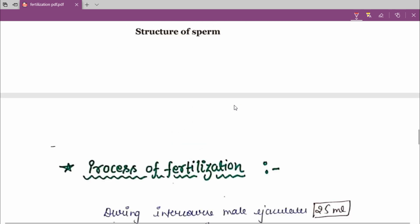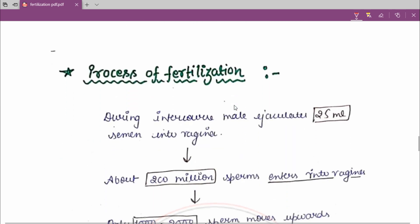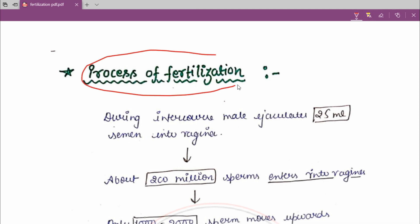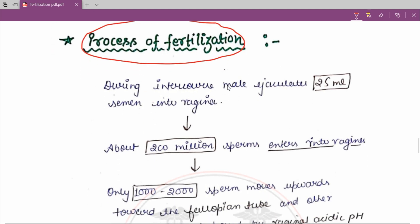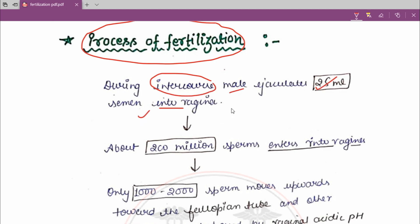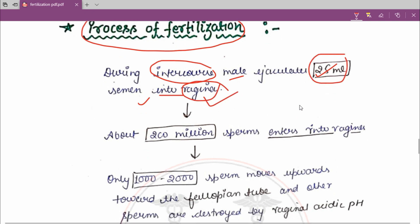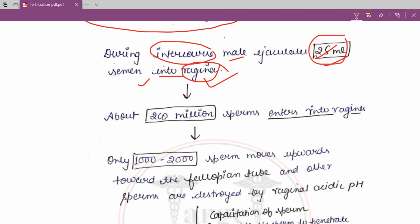Now moving to the process of fertilization, which is the main topic. How does fertilization take place? Looking at the flow chart: during intercourse, the male ejaculates 2.5 ml of semen into the vagina.